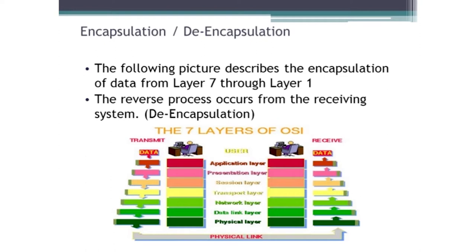There are other things in those headers that help us with communications — things like windowing or sliding windows for flow control and many other pieces. It's important information to know that it needs to be put into this process of encapsulation. And as we go through layer 3, we put the IP address on.